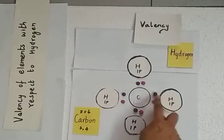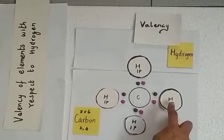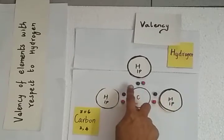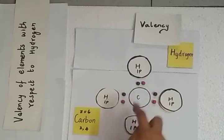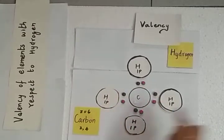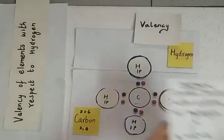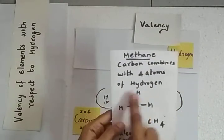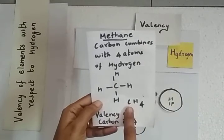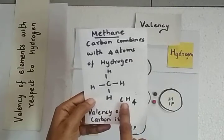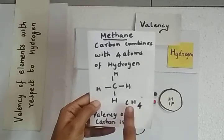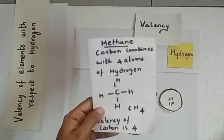Each hydrogen atom shares 1 electron with carbon, so the valency of hydrogen is 1. Carbon needs 4 more electrons to complete its octet, so carbon combines with 4 atoms of hydrogen, forming 4 bonds. The molecule formed is CH₄, which is methane.